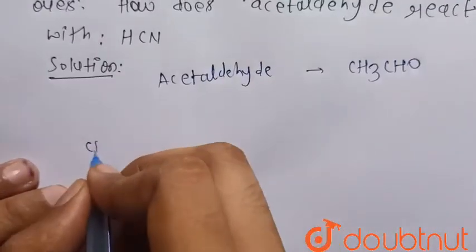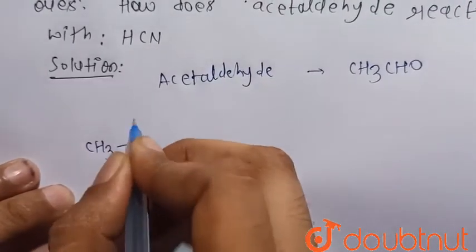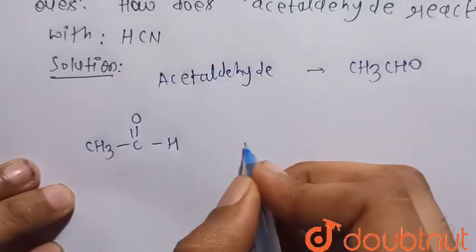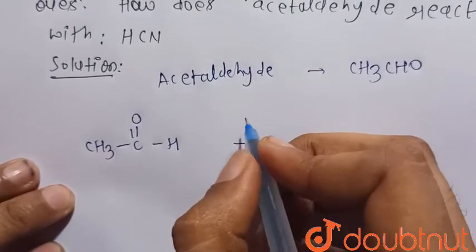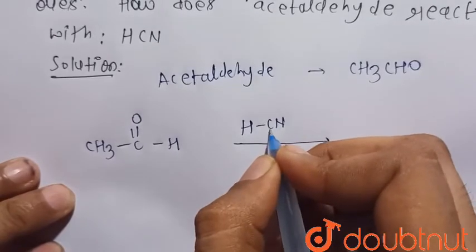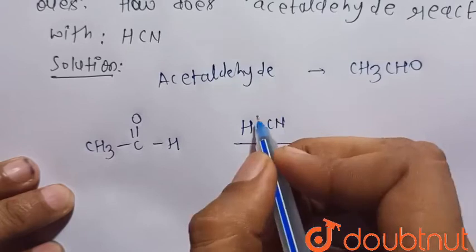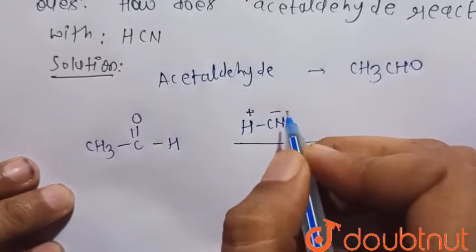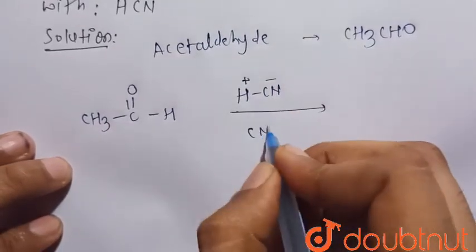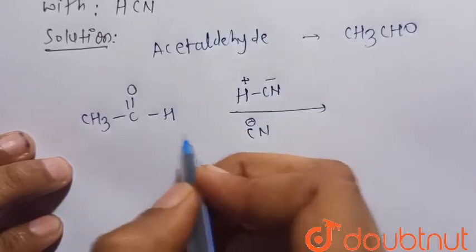So we can write it this way: CH3C double bond O-H. And HCN - so when it reacts with HCN, we know that this carbon is SP hybridized, that is it has C triple bond N. So this is H+ and this is CN-. So CN- from HCN will attack this carbon.